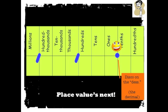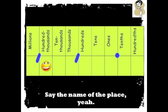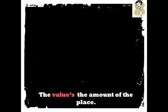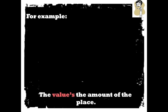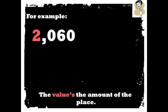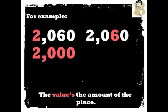Place values next, let's go on the desk. Ones, tenths, hundredths to the left. Thousands and thousands, hundreds, thousands. Say the name of the place, the value's the amount of the place. For example, two thousand six. The value of the two is two zero, zero, zero. Value of the six is six, zero.